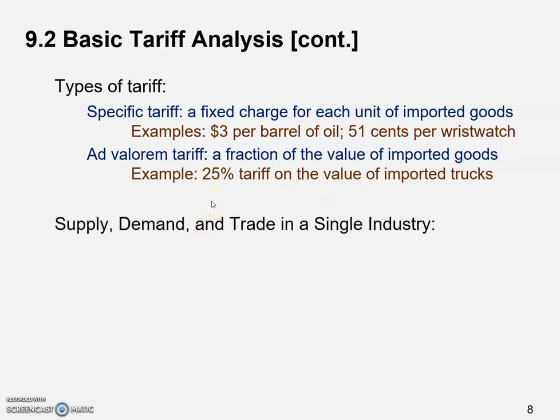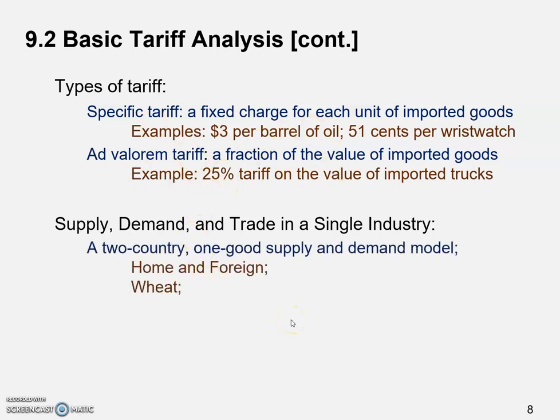The graphical tool we're going to use for the analysis is a simple supply and demand graph. We're not going to use the more sophisticated models from previous chapters, like the specific factor model or the Heckscher-Ohlin model. We'll use intro-level supply and demand — which is the good news. The model setup is a two-country, one-good supply and demand model. The two countries are Home and Foreign, exactly as we've seen in previous chapters. The one good here is wheat, but it could be anything.